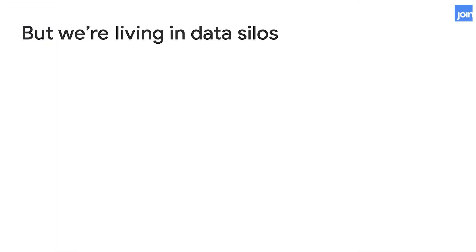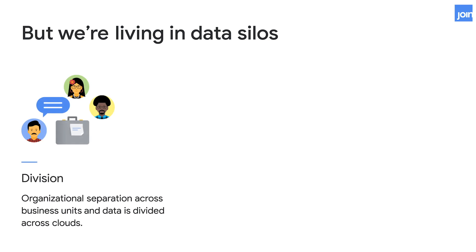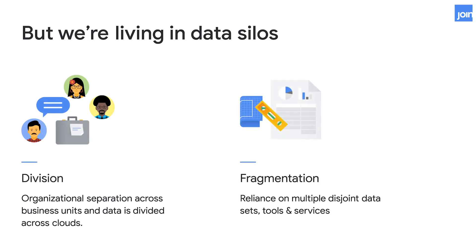There are a few reasons for why these silos exist. But at its core, we can think of division and fragmentation. With division, you have organizational separation — IT departments, a central data department, and every single business unit underneath that. And then what that leads to is fragmentation: you have a bunch of different data sources, all of which come in different types, different tools, different services, different logins, and there's no consistency.